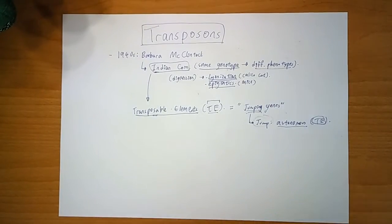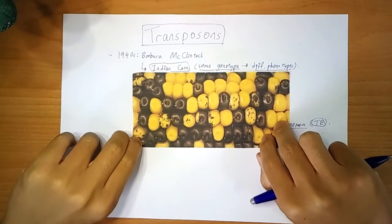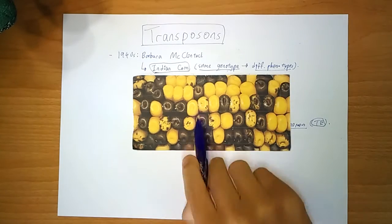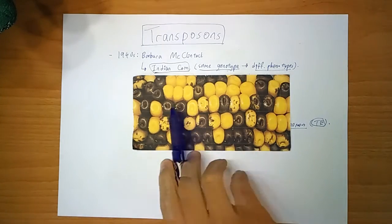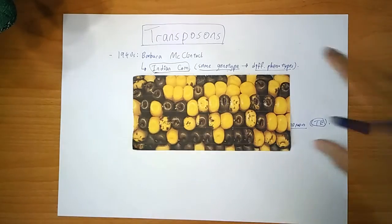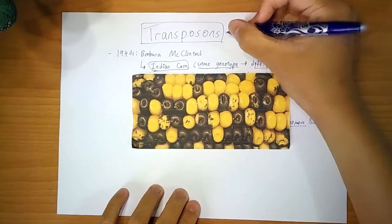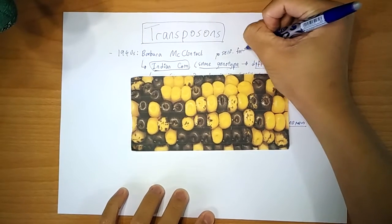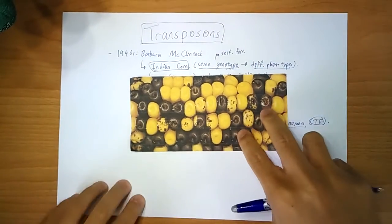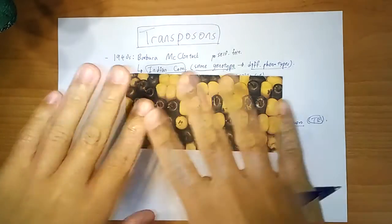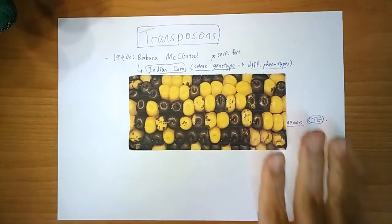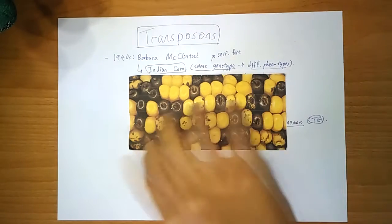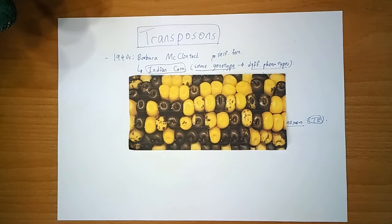And she did this while studying the Indian corn. And this is how it looks like. So this is the corn, and these are the kernels here. And the strange thing to note is that within the corn, because the corn are mostly self-fertilized, they fertilize themselves. So although these are seeds, they more or less have the same genes. So within similar genotypes, you can have different phenotypes.